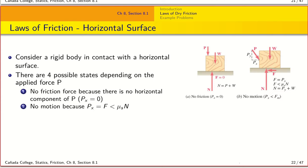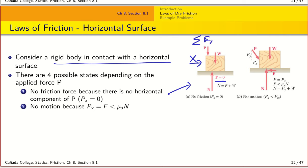Let's apply the laws of friction to a horizontal surface. We're looking at a rigid body in contact with the horizontal surface. Based on this we can identify four different scenarios. Case one: there is no horizontal component of force applied, so there is no opposing friction force. The friction force F is zero because sigma Fx = 0 means P = F = 0.